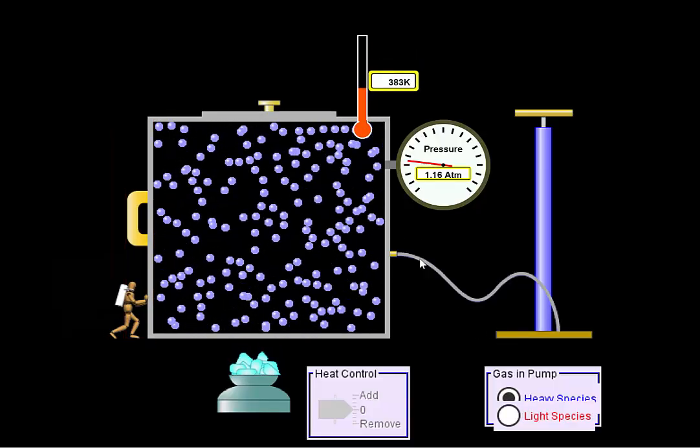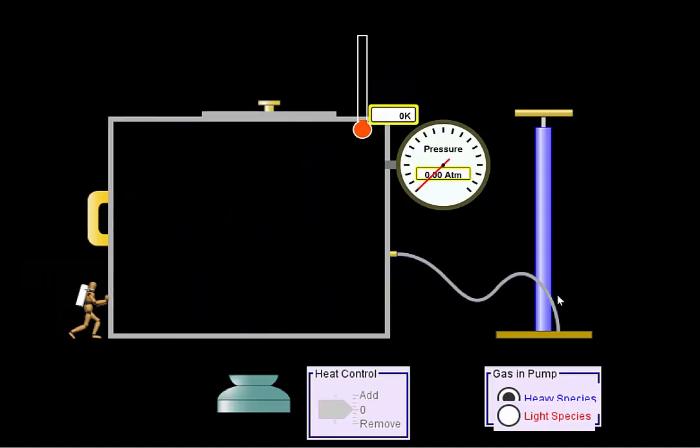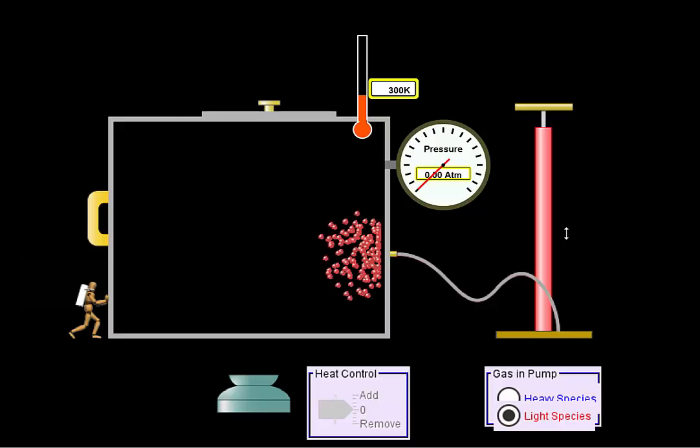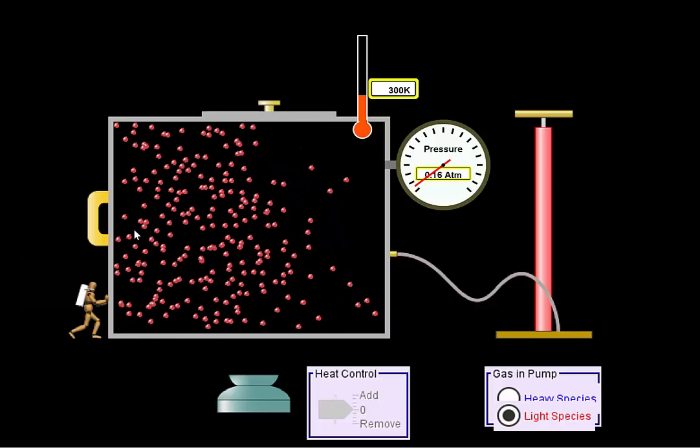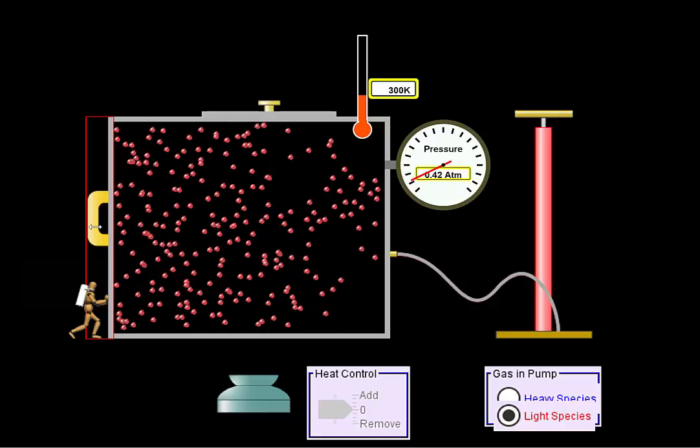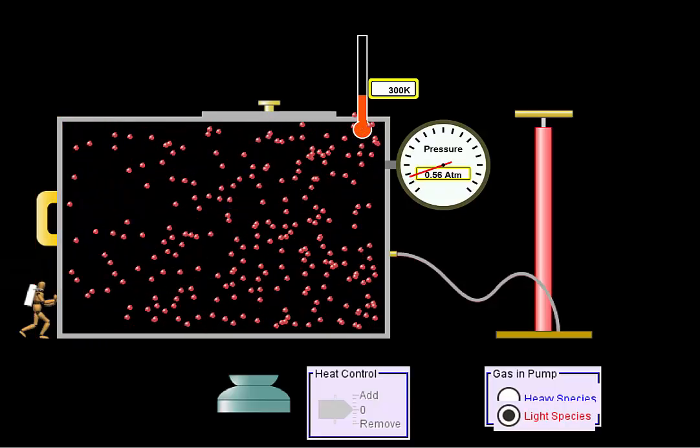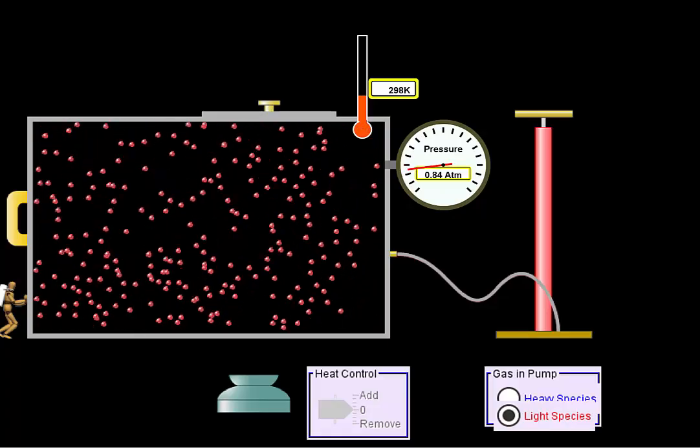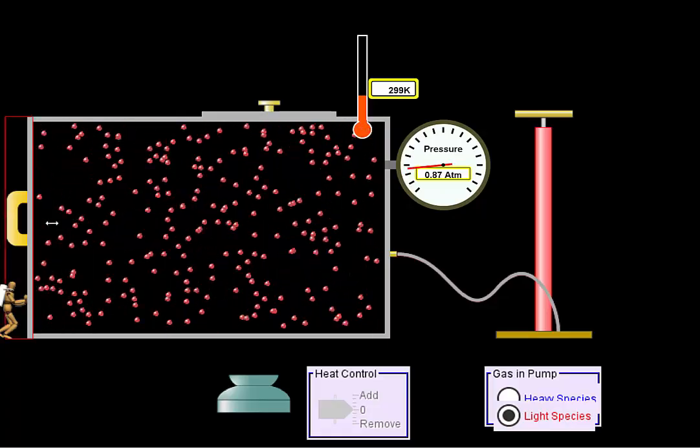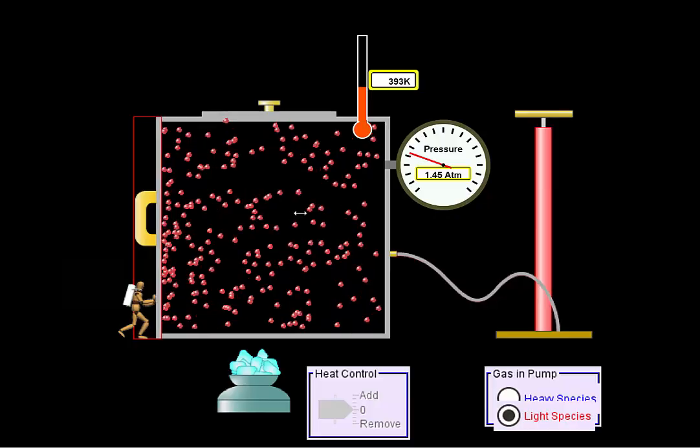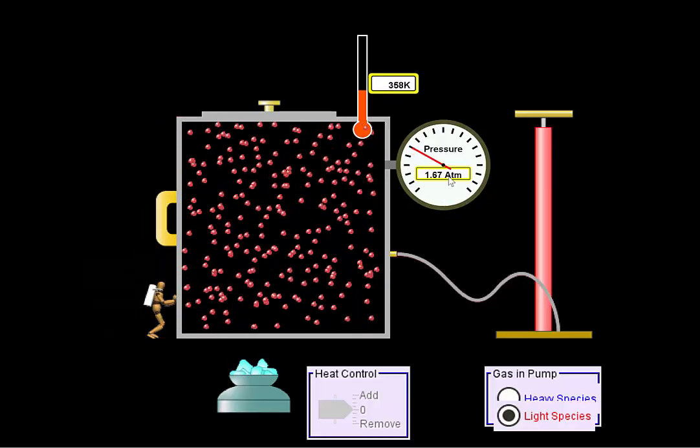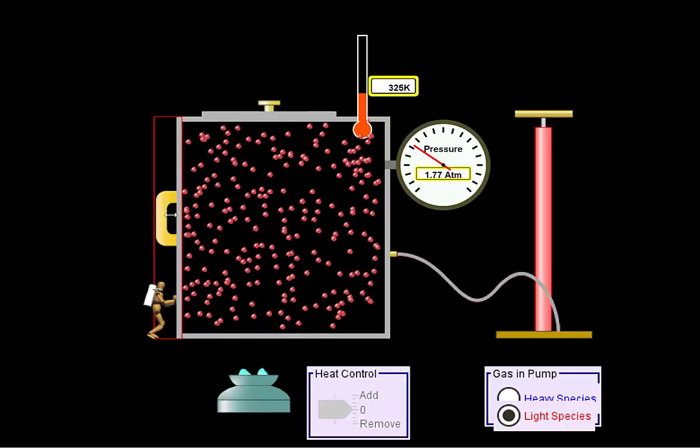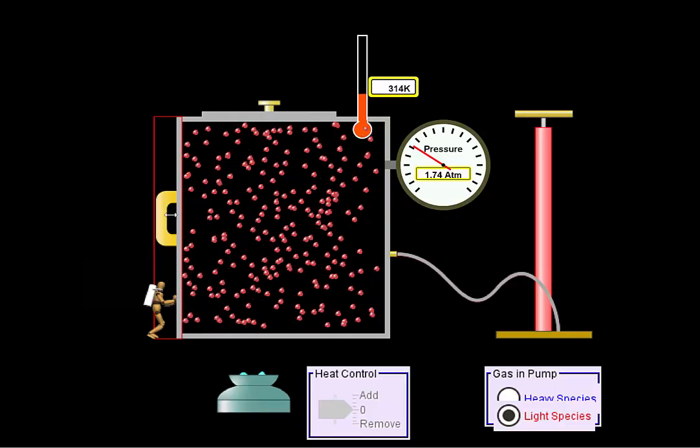And it doesn't matter what type of molecules. Let's reset this. I had heavy stuff. Let's put in light stuff. I'm going to put in two pumps, just like I did before. You'll notice the light ones move a lot more. But the fact is, when I make my volume bigger, my pressure goes down. It's now at 0.84. When I make my volume smaller, I increase those collisions, and boom, my pressure goes way up.